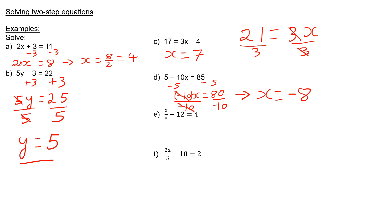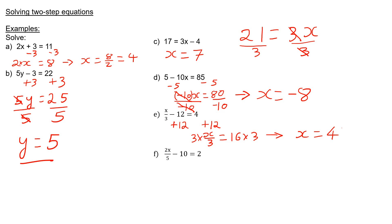In question E, I first need to add 12 to both sides, which leaves me with x over 3 equals 16. I then multiply both sides of the equation by 3. This will leave me with x equals 3 times 16, which is 48.